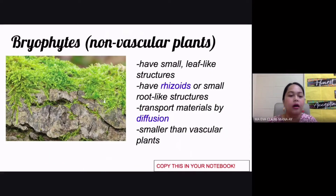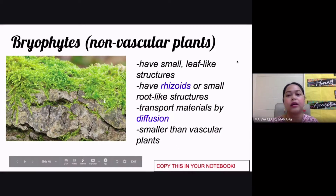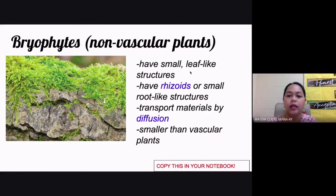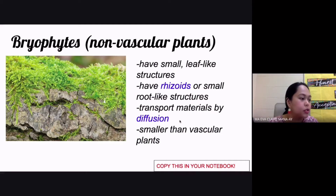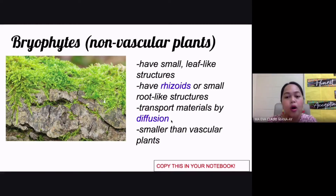The first phylum is bryophytes. They are non-vascular plants, meaning they don't have xylem or phloem. They only have small leaf-like structures and rhizoids, which are small root-like structures that absorb water, nutrients, and other materials from the soil. Since they lack vascular tissue, they transport materials by diffusion.